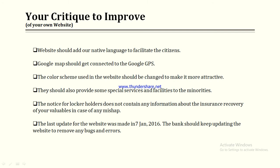The next section covers our own critiques to improve the website. First, the website should add our native language — Urdu — to facilitate citizens, as English is not our native language and most citizens of Pakistan do not clearly speak or understand English. Additionally, the Google Map added on the website is not connected to GPS, which does not provide the exact location, so it should be connected to Google GPS.